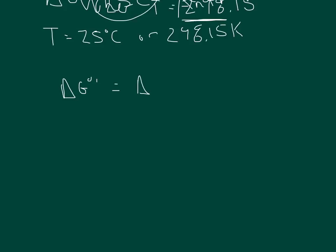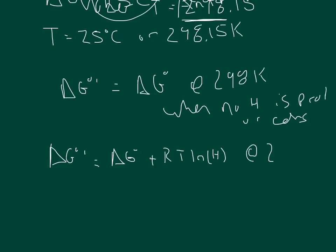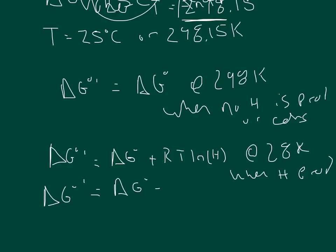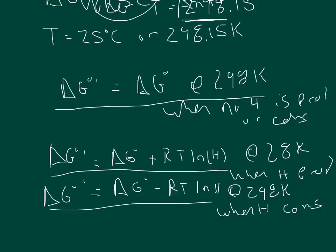To summarize, there are three equations. When no hydrogen is produced or consumed: delta G biochemical standard state equals delta G standard state at 298 K. When hydrogen is produced: delta G biochemical standard state equals delta G standard state plus RT times n times ln(H) at 298 K. When hydrogen is consumed: delta G biochemical standard state equals delta G standard state minus RT times n times ln(H) at 298 K. Three equations — pretty simple.